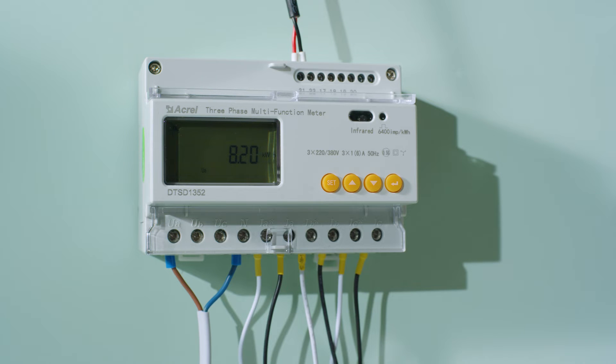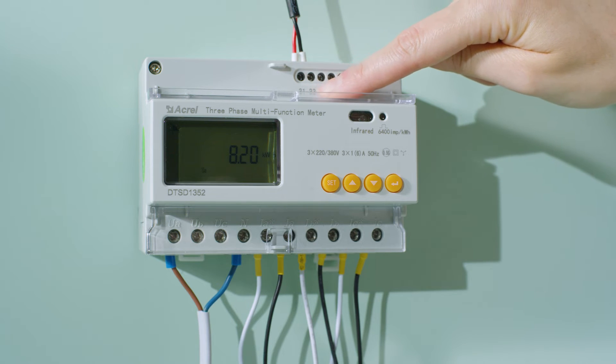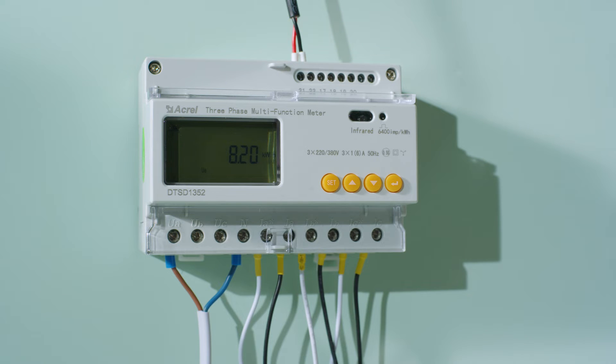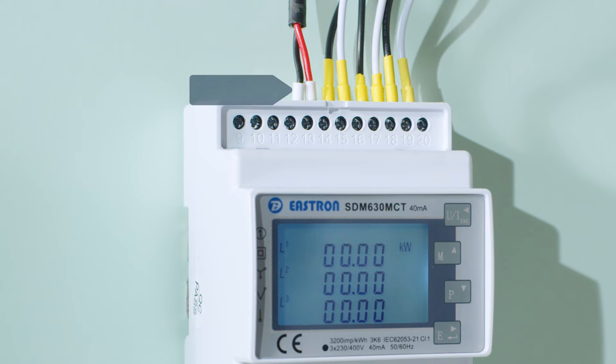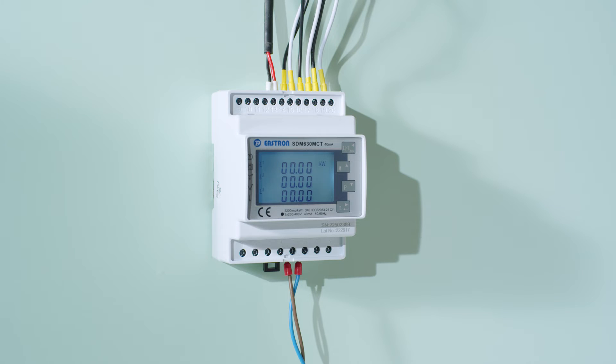Connect the RS485 wires. For Acuvim meters, use connection points 21 and 22. For Eastron meters, use connection points 13 and 14. Please note that the direction of the phase numbering is opposite compared to Acuvim meters.